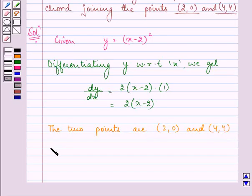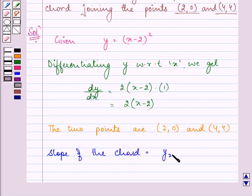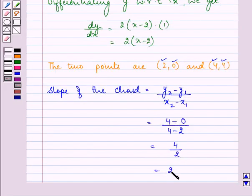Now slope of the chord can be found by (y₂-y₁)/(x₂-x₁). So we have (4-0)/(4-2), that is equal to 4/2, which equals 2.